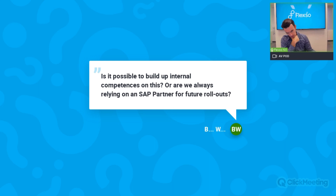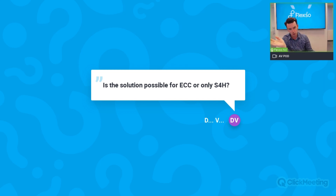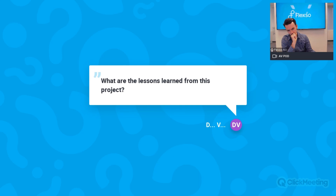Question: is the solution possible for ECC or only S/4HANA? The solution supports both. Plant Maintenance and service notifications haven't changed much in S/4HANA — especially the data model — so there is little to no difference.